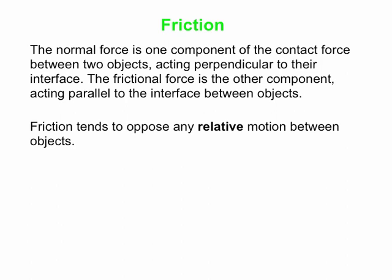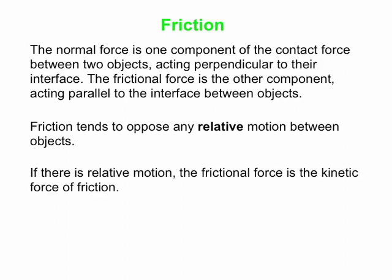Often, people think that friction just opposes motion. What it really does is it opposes any relative motion between objects. This word 'relative' is very important. If there is relative motion, then the frictional force is the kinetic force of friction. So if two objects are in contact with one another and they are moving with respect to each other, that's the kinetic force of friction that's involved, if there's a friction force.